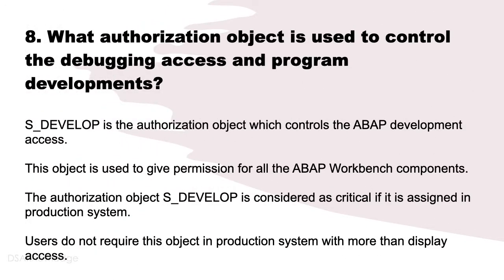What authorization object is used to control debugging access and program developments? S_DEVELOP is the authorization object which controls development access. This object is used to give permission for all ABAP Workbench components. S_DEVELOP is considered critical if it is assigned in the production system. Users do not require this object in the production system with display access.